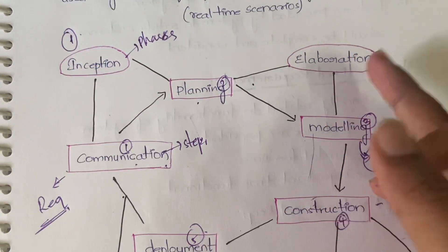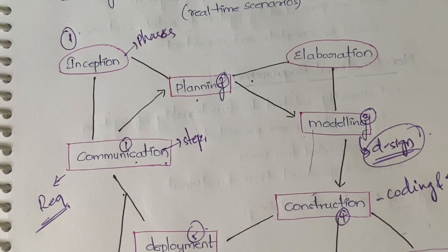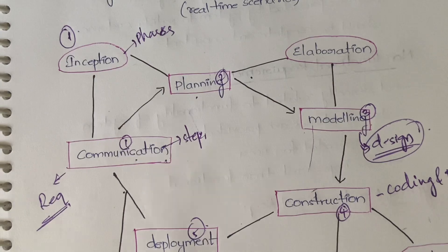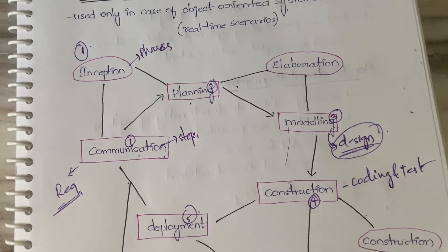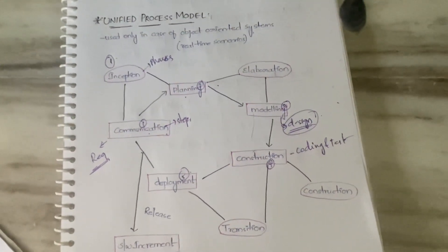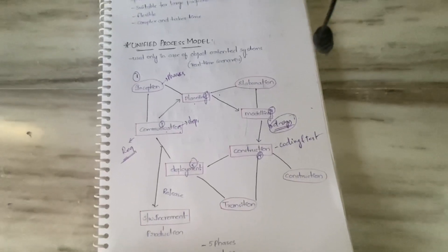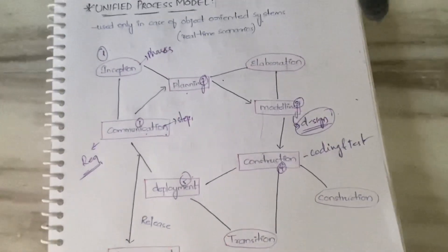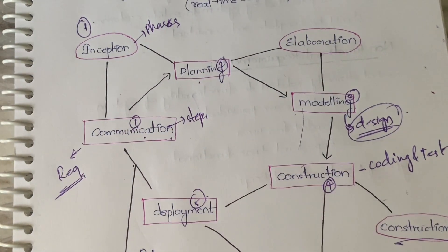In elaboration we have two things again: number one is planning and number two is modeling. In elaboration you'll be doing the planning and modeling activities. When writing about this model, first draw this diagram. Just take a screenshot of this, it will be useful for you.